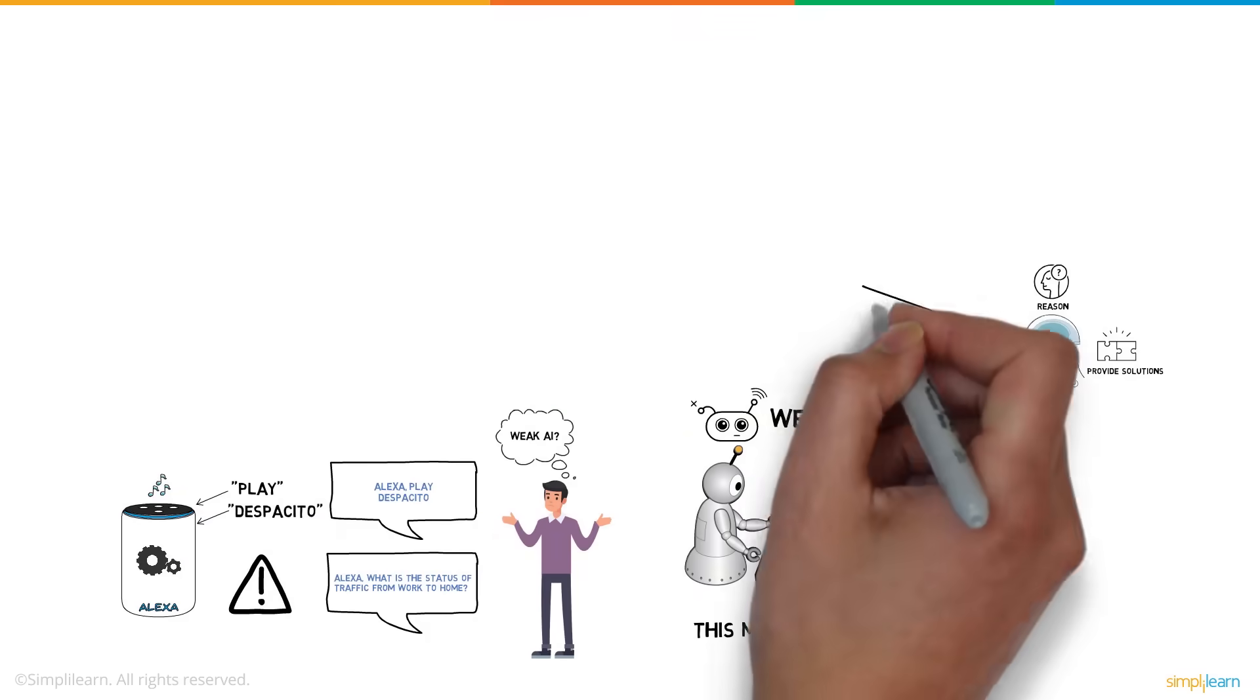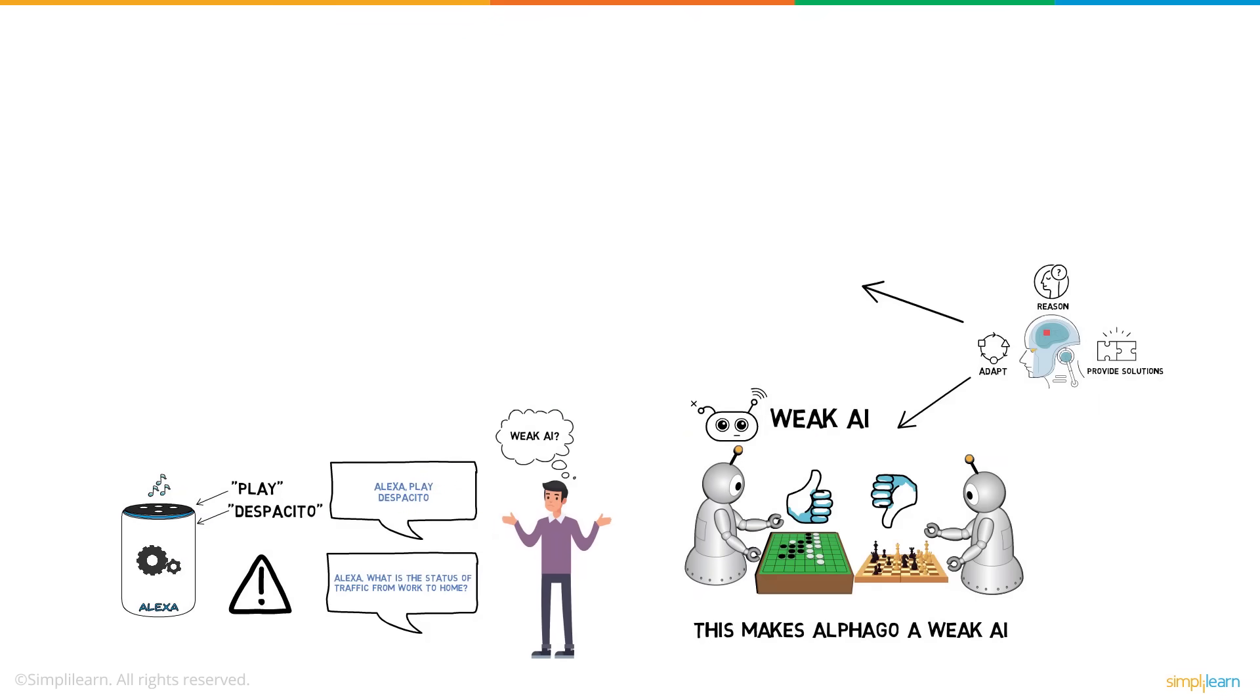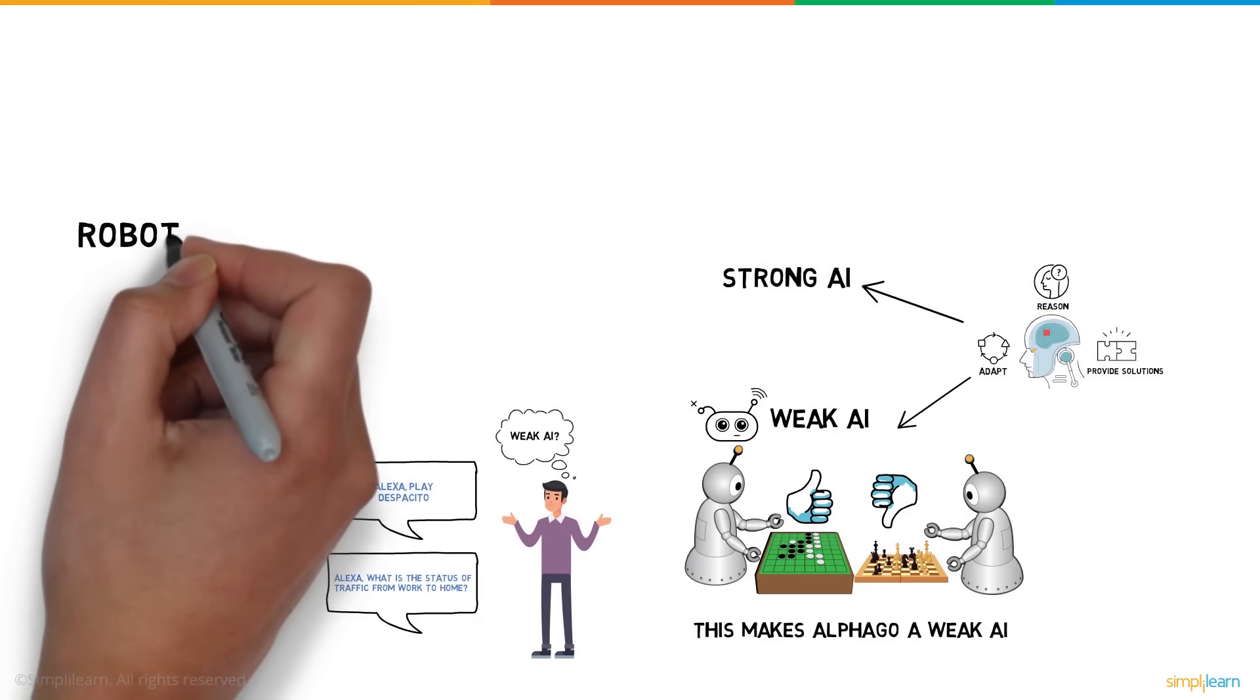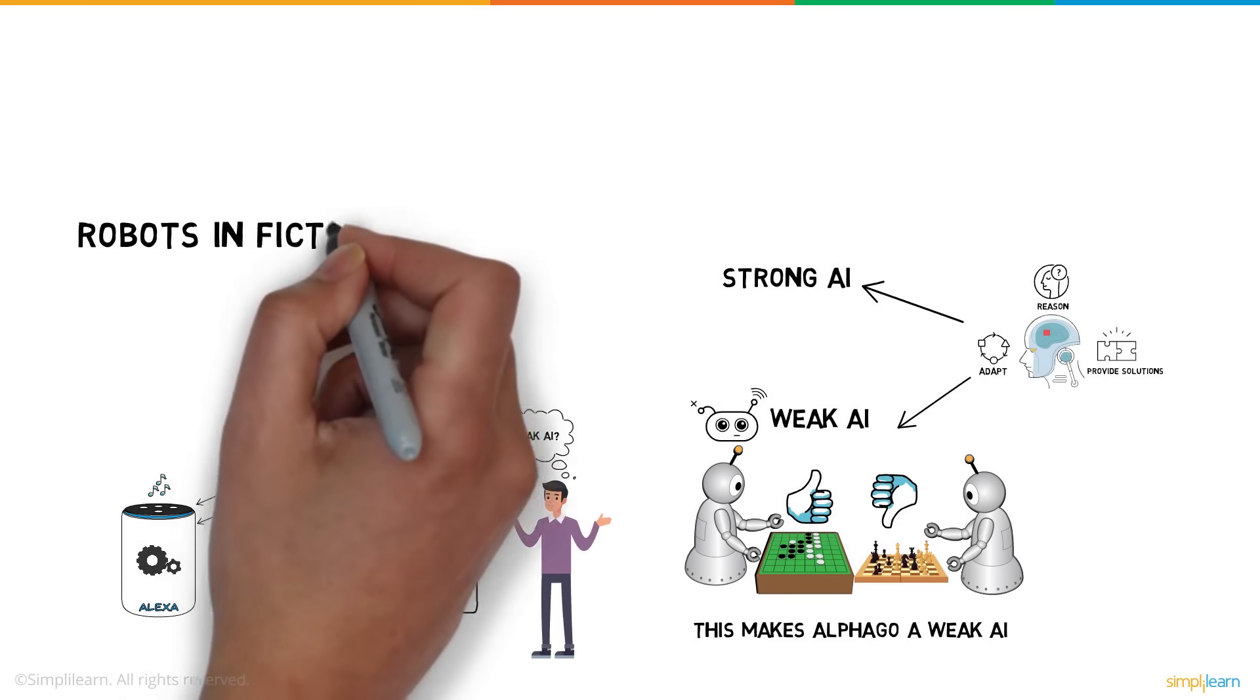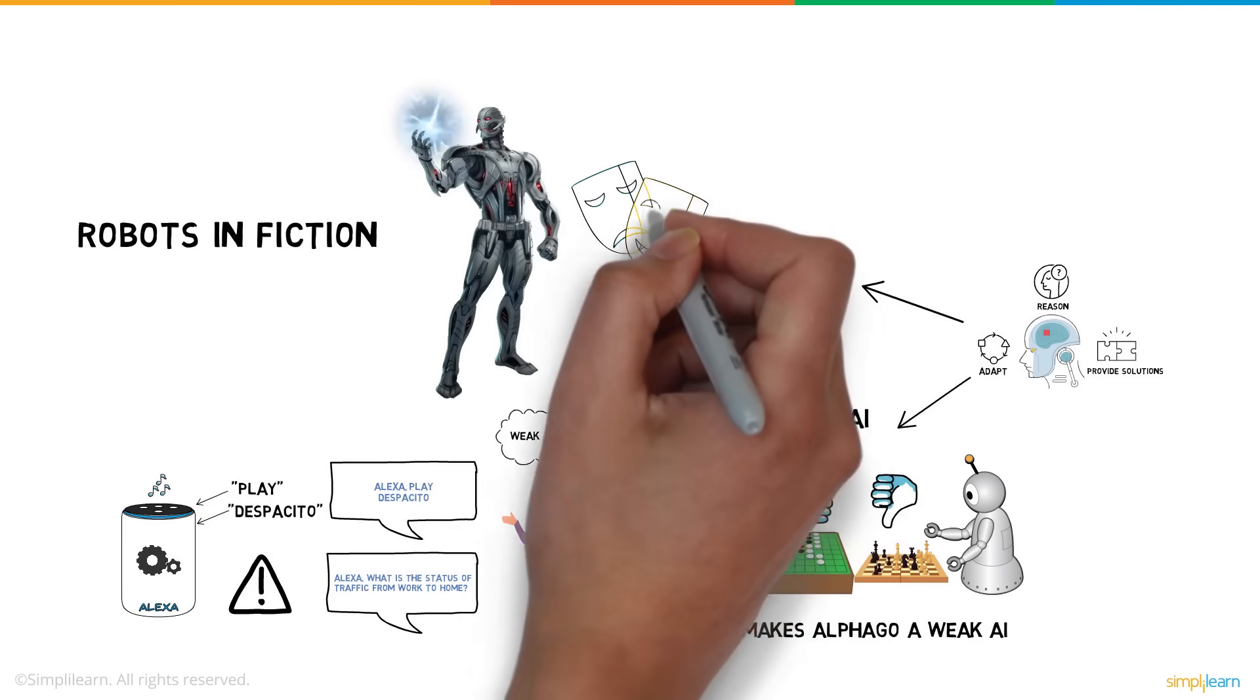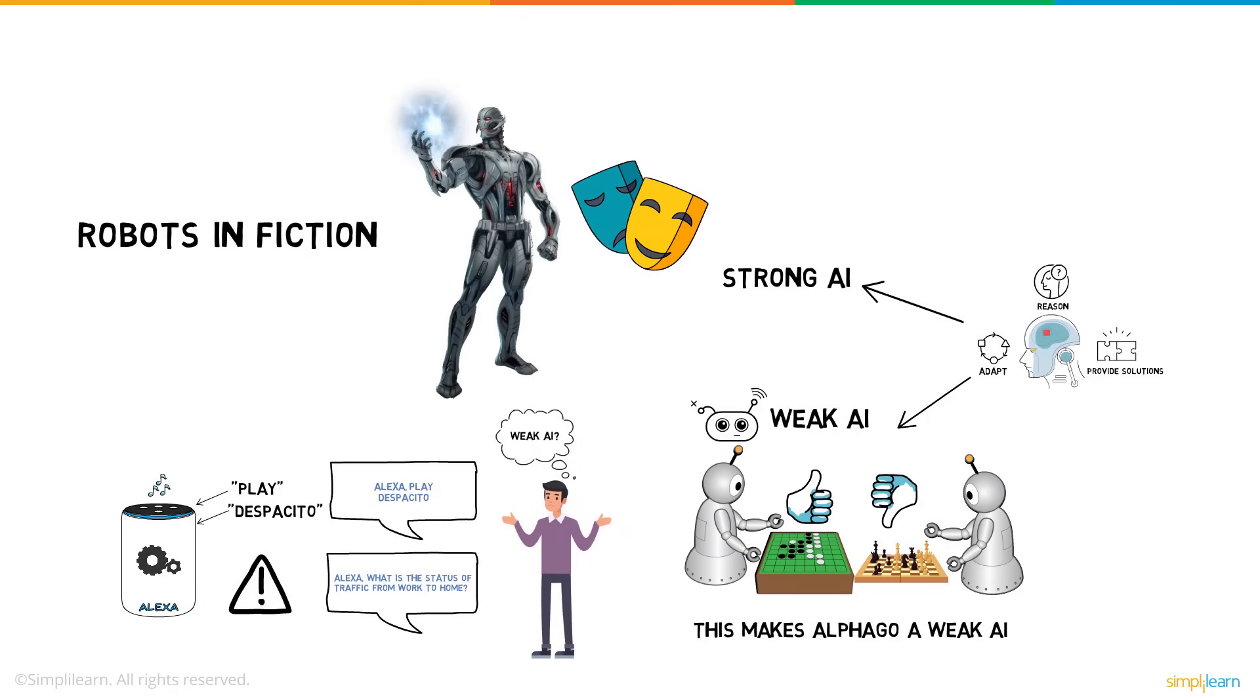And that brings us to our second category of AI, strong AI. Now, this is much like the robots that only exist in fiction as of now. Ultron from Avengers is an ideal example of a strong AI. That's because it's self-aware and eventually even develops emotions. This makes the AI's response unpredictable.